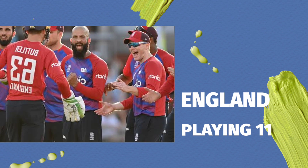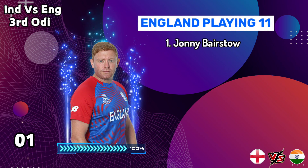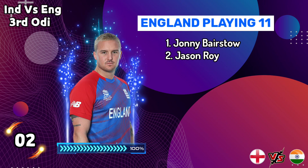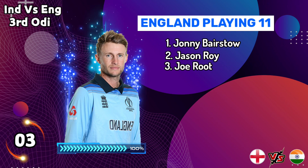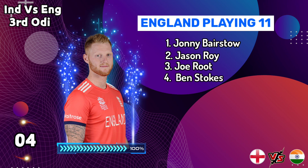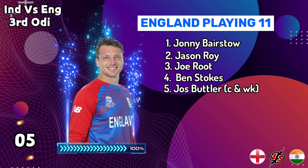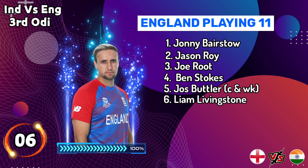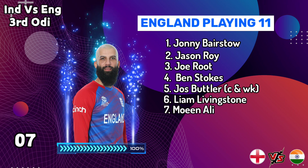England team playing eleven for the 3rd ODI match: Number 1, Jonny Bairstow. Number 2, Jason Roy. Number 3, Joe Root. Number 4, Ben Stokes. Number 5, Jos Buttler. Number 6, Liam Livingstone. Number 7, Moeen Ali.